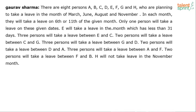E will take a leave in the month which has less than 31 days. Three persons will take a leave between E and C. Two persons will take a leave between C and G. Three persons will take a leave between G and D. Two persons will take a leave between D and A. Three persons will take a leave between A and F. Two persons will take a leave between F and B. H will not take leave in the month of November.